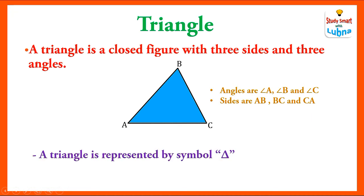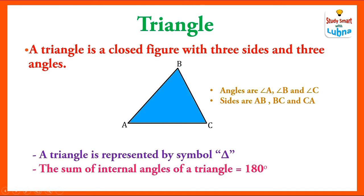A triangle is represented by a symbol — this small triangle symbol. And the sum of internal angles of a triangle is equal to 180 degrees, meaning the sum of all three angles of a triangle is equal to 180 degrees.